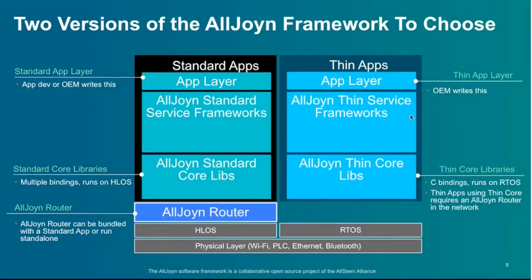The core library is split into two parts. The Standard Core Library (SCL) runs on a high-level OS, manages multiple threads, and has more complex API sets. It can bundle in the router so one downloaded app has all functionality self-included. For supporting the Internet of Things, the AllJoin Thin Core Library runs on very tiny microcontrollers with the exact same capability to expose itself as an AllJoin application, just on a very small footprint with single-loop execution.